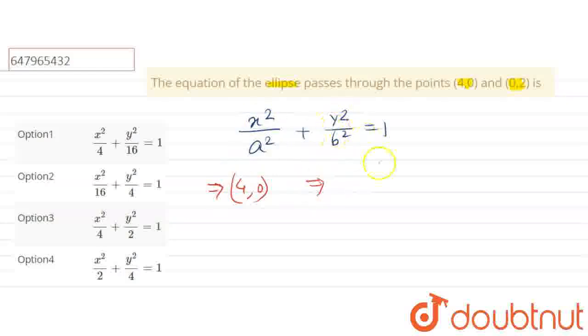Substituting x = 4 and y = 0: 4 squared, that is 16 by a² plus y = 0, that is 0 by b², equals 1. From this we get a² = 16.